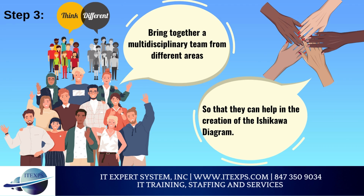Step 3: Bring together a multidisciplinary team from different areas, so that they can help in the creation of the Ishikawa Diagram. After presenting the information about the diagram, it is necessary to promote a brainstorming about the problem that needs to be solved. Brainstorming is basically an activity designed to explore the creative potentiality of an individual or, as in this case, a group.